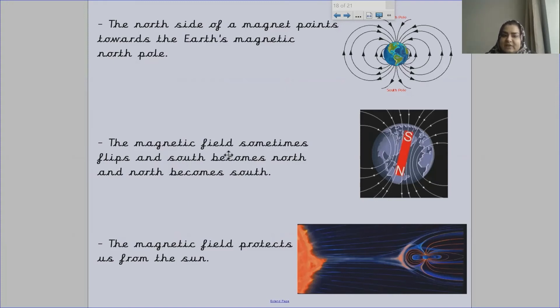The magnetic field sometimes flips and south becomes north and north becomes south. So sometimes the magnetic field around Earth will flip around. Sometimes it will go around and go between north and south, and sometimes it will go from south to north.